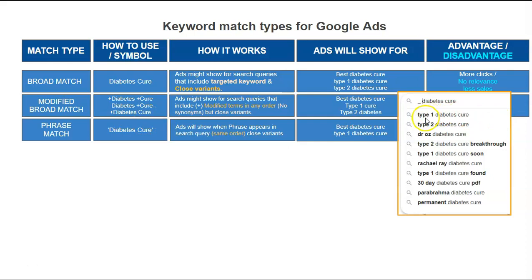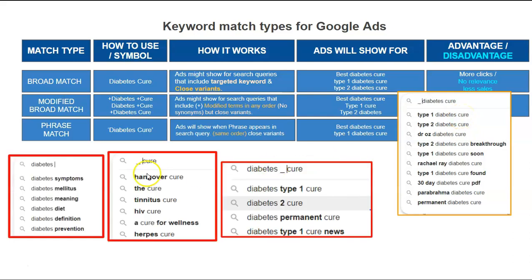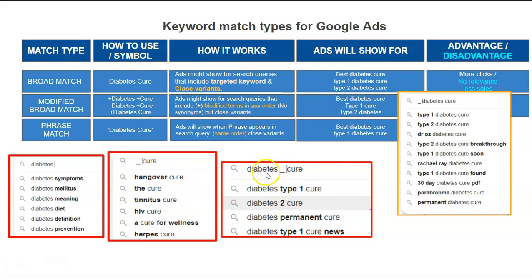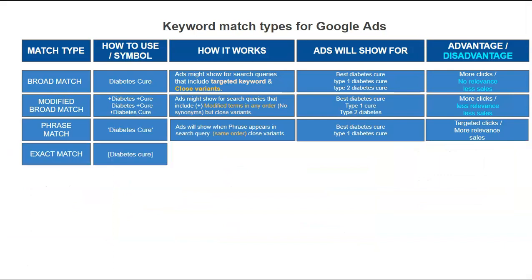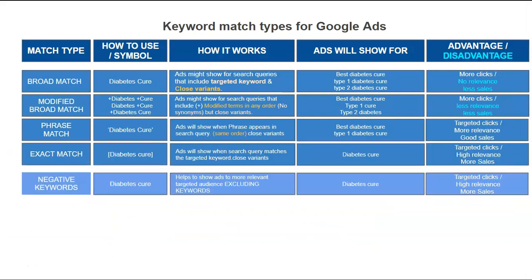Phrase match — if somebody types 'type 1 diabetes cure,' your ad will trigger. But your ad will not trigger for just 'diabetes' alone. The phrase must appear in the query. It will only show when that specific phrase is present in what people are searching. Then there's exact match and negative keywords, which are easier to understand — you can watch that dedicated video for those.